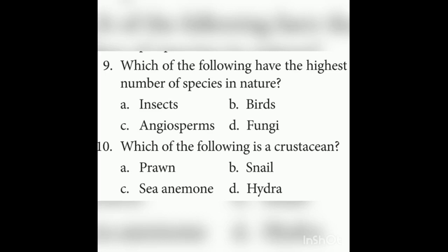Tenth question: Which of the following is a crustacean? Crustaceans belong to Arthropoda. The answer is prawn. Crab, prawn, and lobsters are examples of crustaceans.